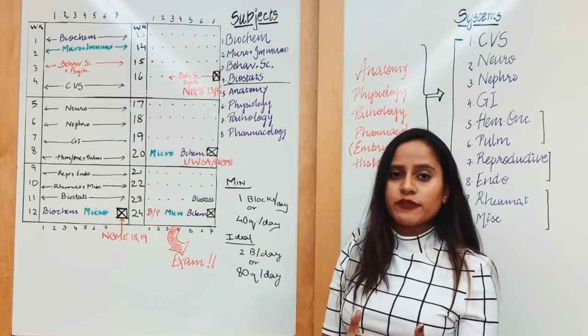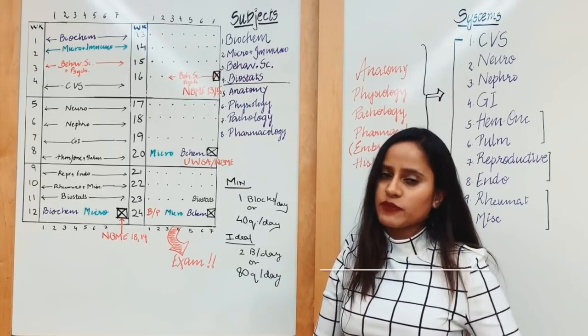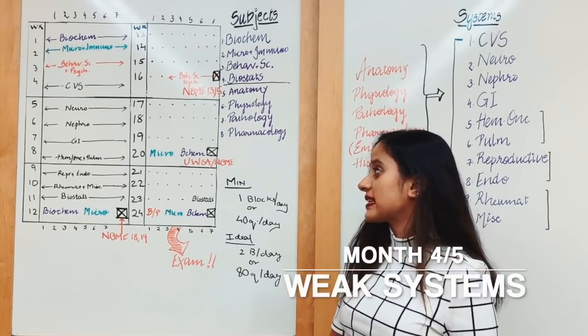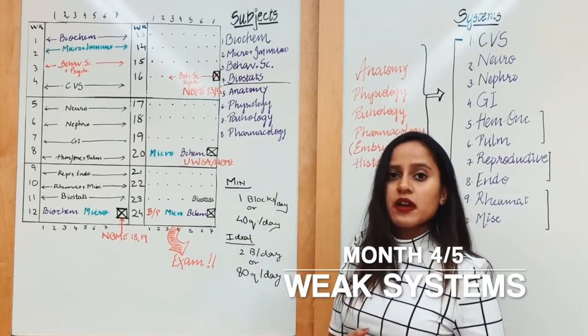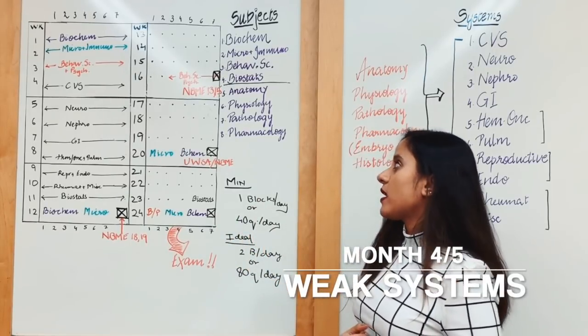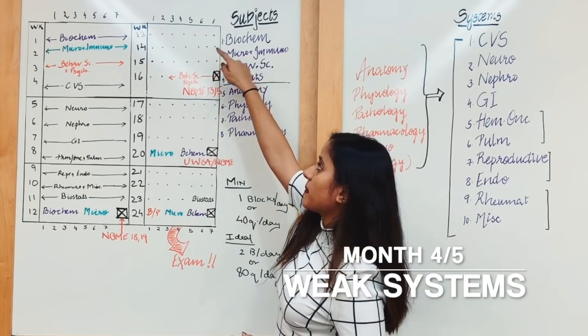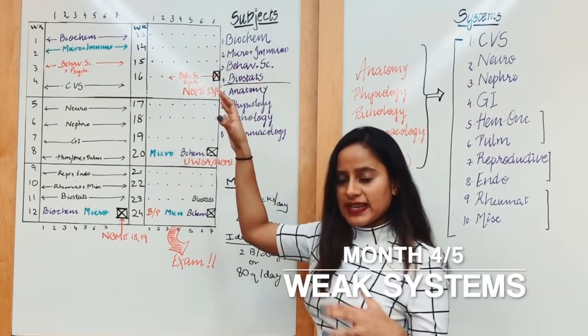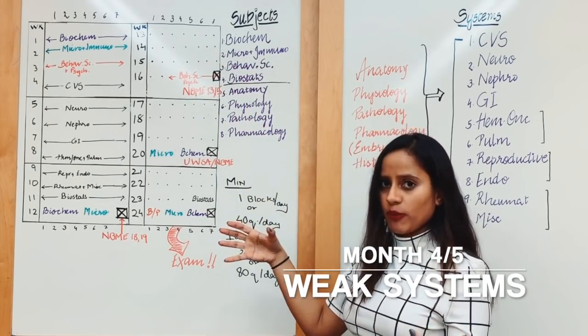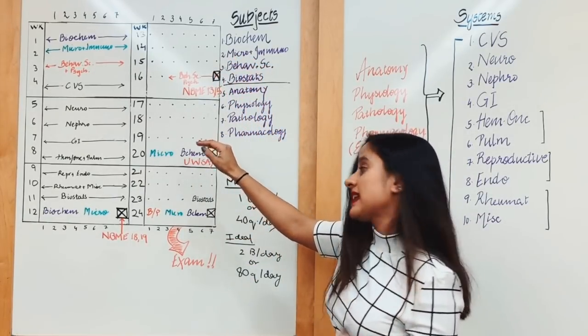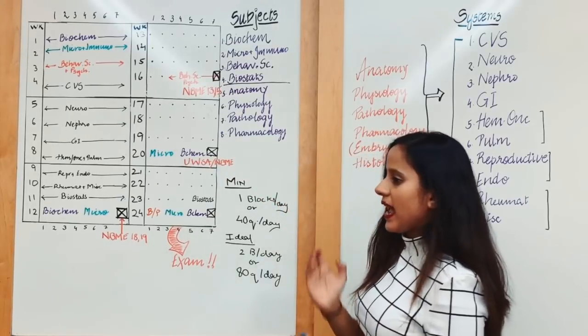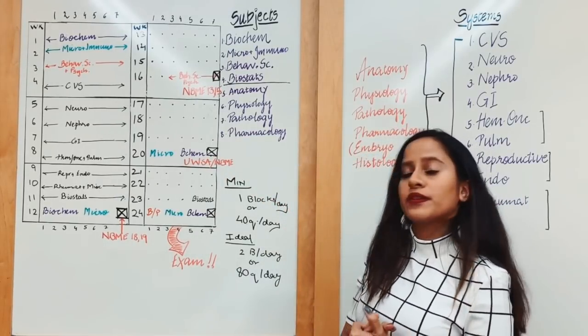Your fourth and fifth months—you have to understand what your weak subjects are. For instance, for me CVS and neurology were my weaker subjects, so I decided to reread them in this week and divided my time appropriately, did questions appropriately.